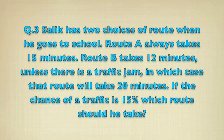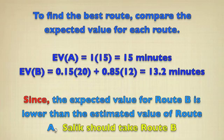That is, Salik has two choices of route when he goes to the school. Route A always takes 15 minutes. Route B takes 12 minutes, unless there is a traffic jam, in which case the route will take 20 minutes. If the chances of traffic is 15%, which route should he take? To solve this, we need to compare the expected value for each route.